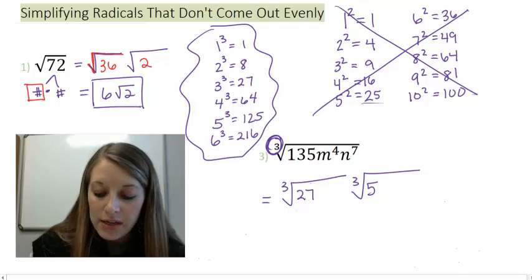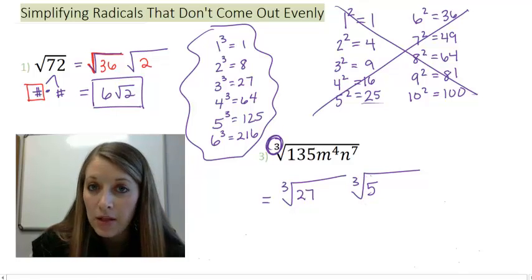Since 27 is a cube, that goes into my good pie. Since 5 is just my leftovers, that goes into my bad pie.